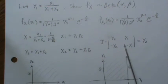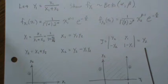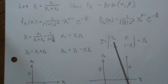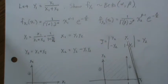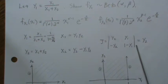And then from these you can find the Jacobian, which is going to be Y2. So it's the derivative of X1 with respect to Y1, derivative X1 with respect to Y2, derivative X2 with respect to Y1, derivative X2 with respect to Y2, and we get this.